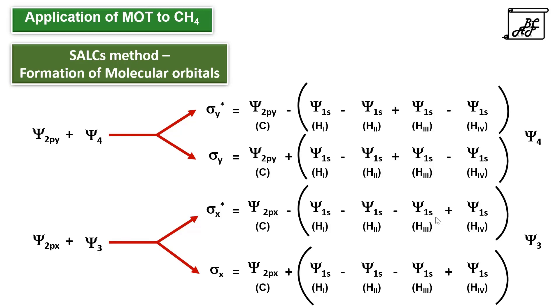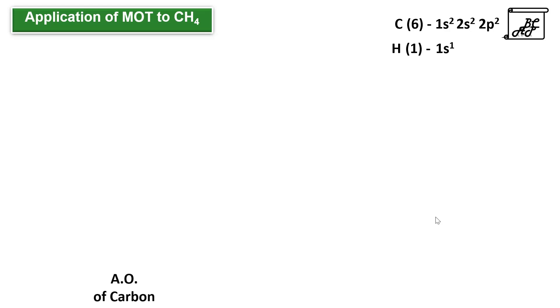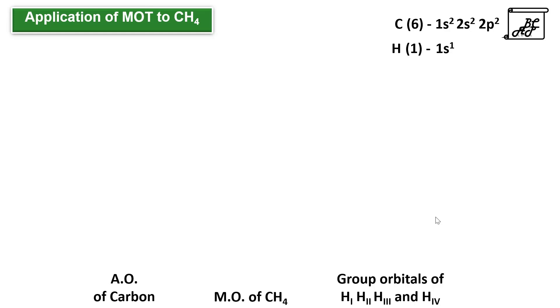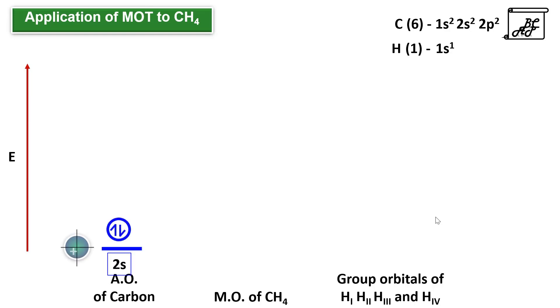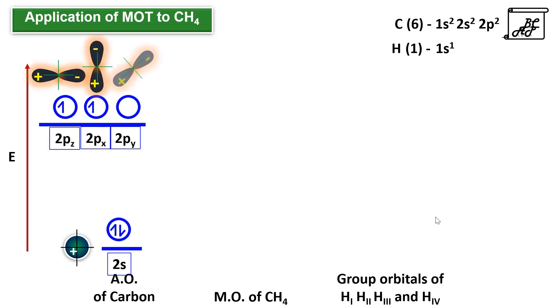This is how four atomic orbitals of the central carbon atom combine with four group orbitals. In total, eight orbitals combine, forming four bonding and four antibonding molecular orbitals. Let us construct the molecular orbital diagram. On the left-hand side we consider atomic orbitals of carbon — 2s, 2pz, 2px, and 2py — and on the right-hand side the group orbitals of four hydrogen atoms.